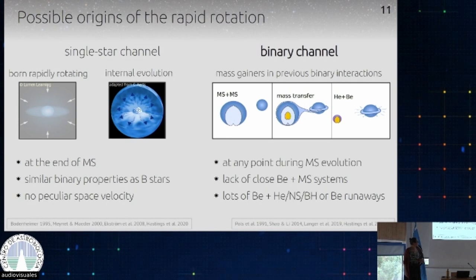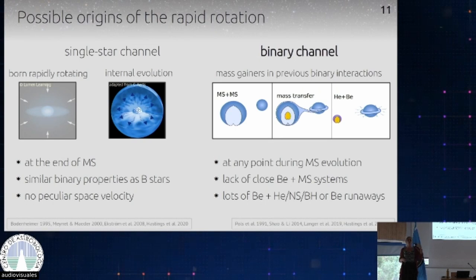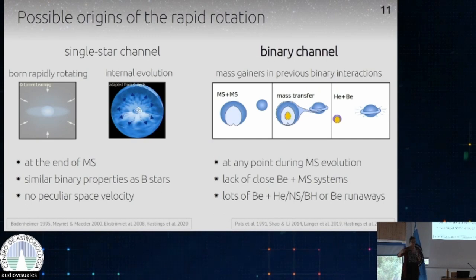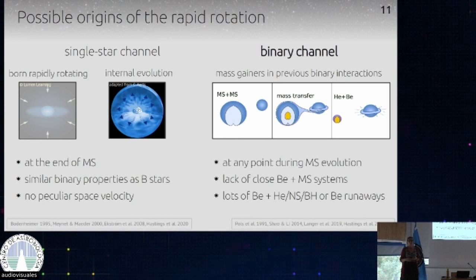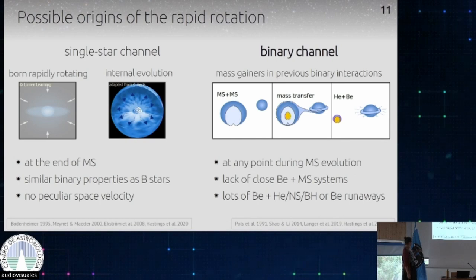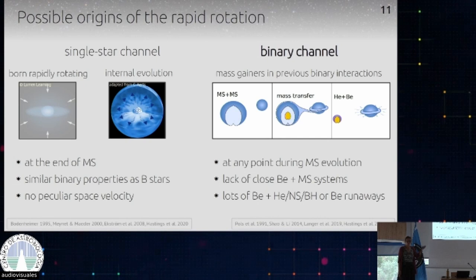You shouldn't see a main sequence companion next to a BE star unless there are triples or quadruples. And if the binary channel dominates, you should see a lot of exotic, interesting companions to BE stars — stripped stars, neutron stars, or black holes. Or if there was a supernova explosion, it could turn the BE star into a runaway because the system is broken apart. So if we compare these scenarios observationally and observe a lot of BE stars, we should actually see a difference and be able to tell which channel dominates.